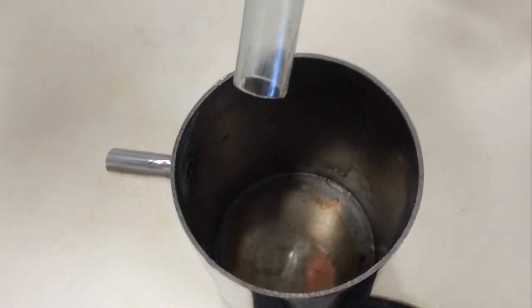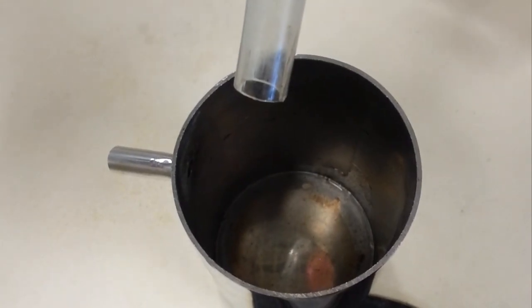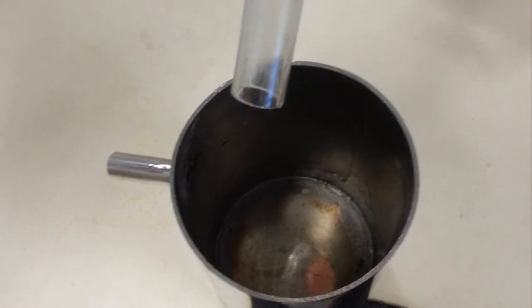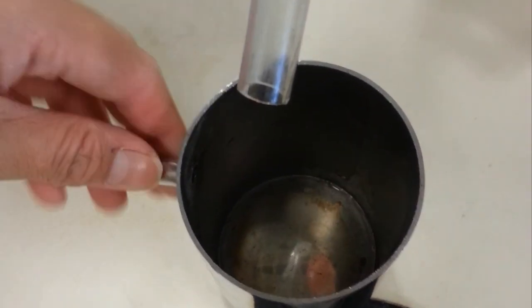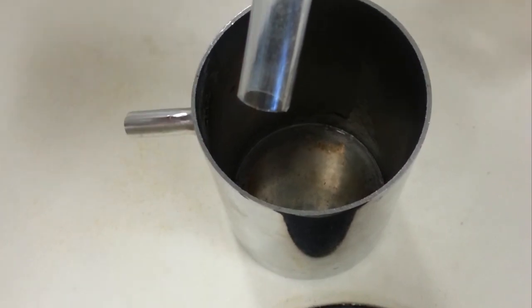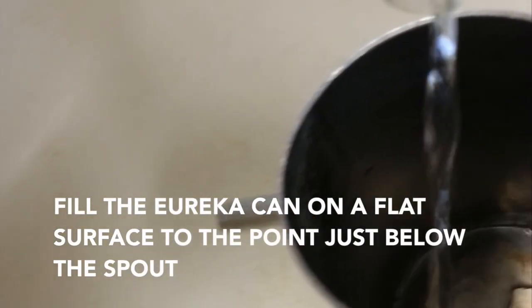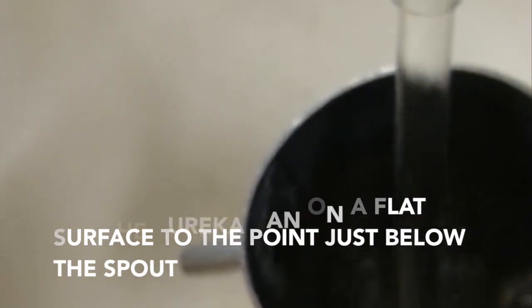The second instrument that we will be using is the Eureka can, also known as the overflow can. We will be using the Eureka can to find the volume of the eraser. Firstly, fill the Eureka can on the flat surface to the point just below the spout.